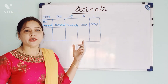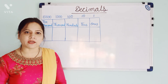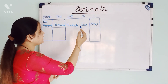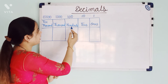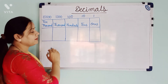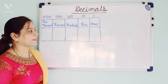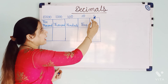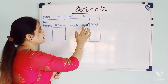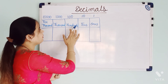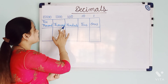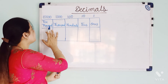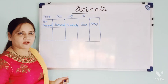Here I have made the place value chart. You can see this is 1's, 10's, 100's, 1000's, and 10,000's place. Now, how we use to denote 1's as 1's, 10's as 10's, 100's as 100's, 1000's as 1000's, and 10,000's as 10,000's.